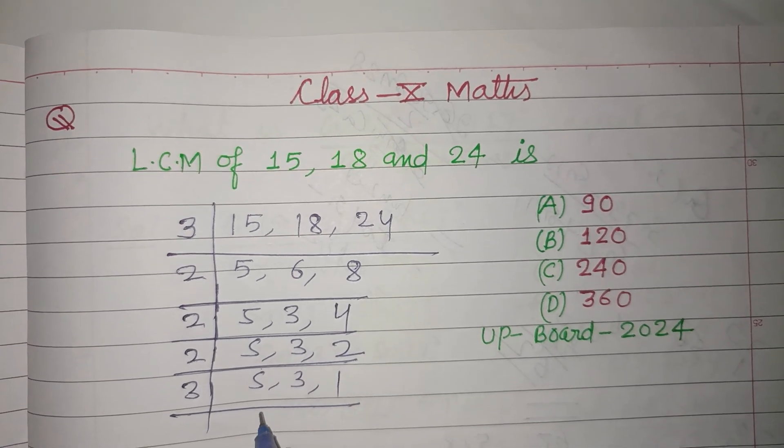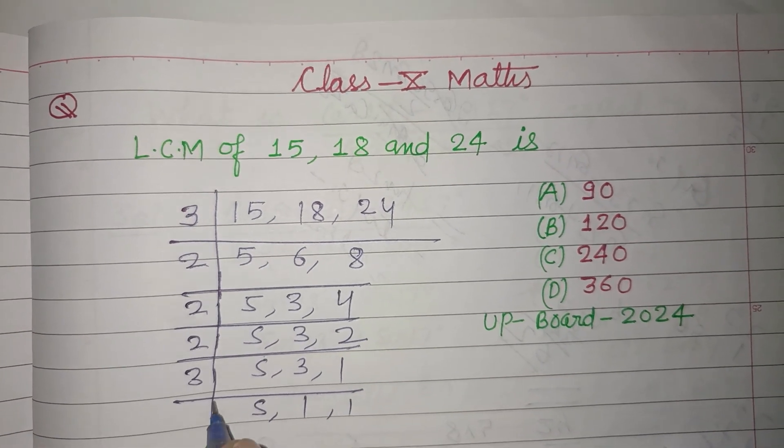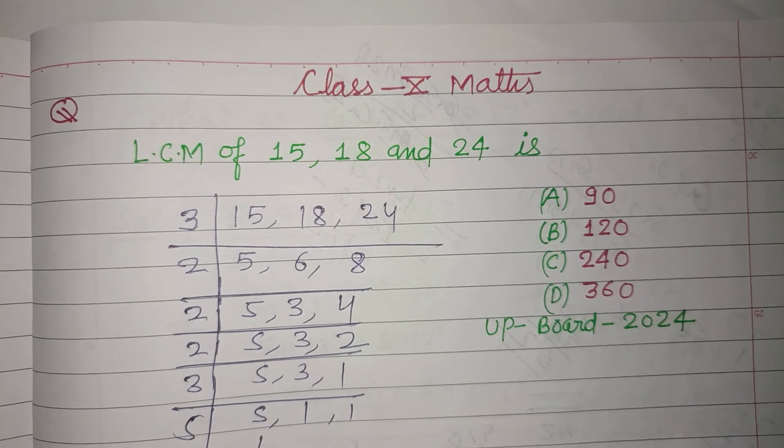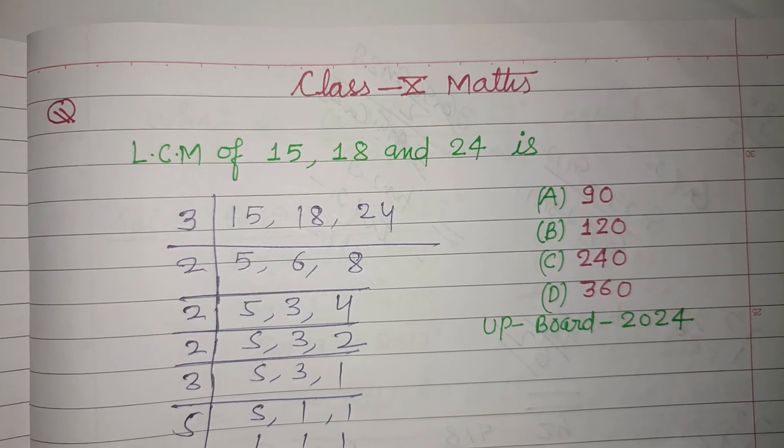Now by 3, we get 5, 1, 1. Now by 5, we get 1, 1, 1. So we obtain 1, 1, 1.